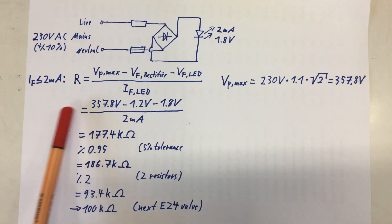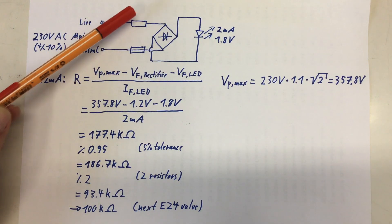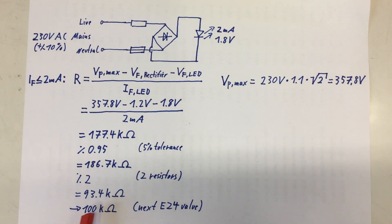You put that together and you get 177.4 kiloohms. Or divide by 0.95, 5% tolerance of the resistor worst case, you get 186.7 kiloohms. Divide that by two resistors, because we will use two, you get 93.4. And the next bigger E24 value is 100 kiloohms.